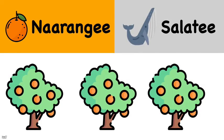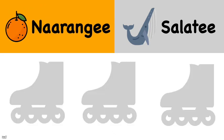And look at these orange trees. What's the color orange in Hindi? Narangi or saleti? Narangi. Look at these gray roller skates — we haven't seen roller skates in a long time! What's the color gray in Hindi? Narangi or saleti? Saleti.